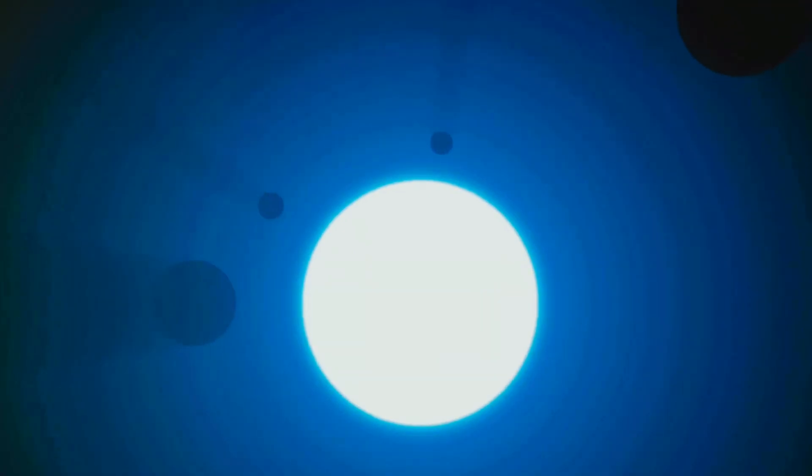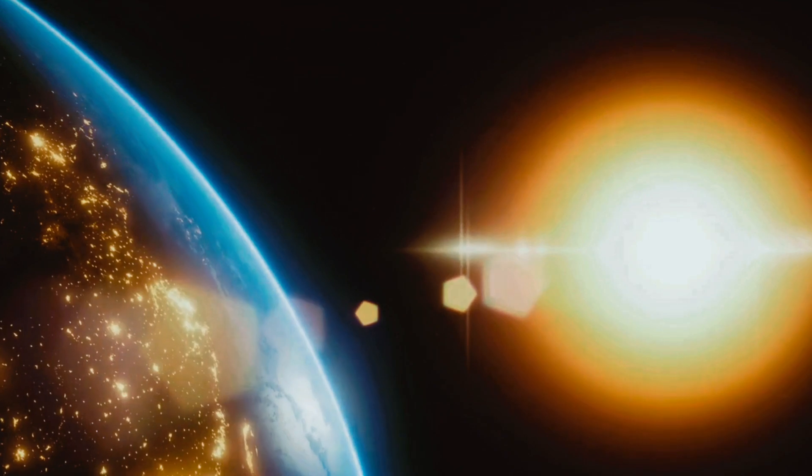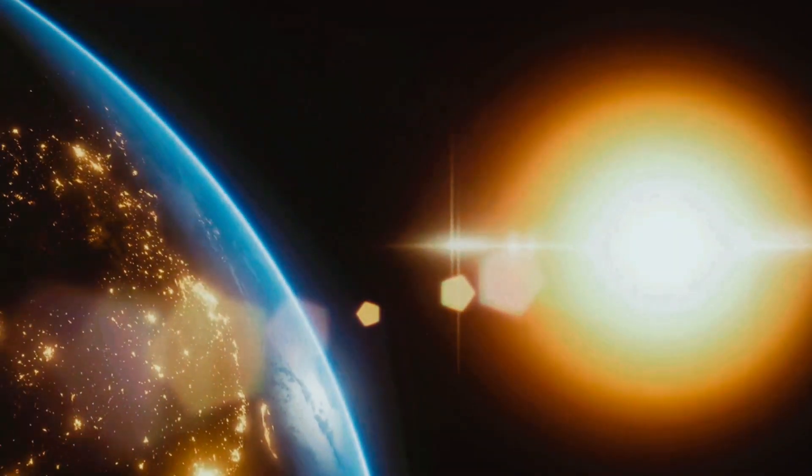We are part of a solar system, a cosmic ballet orchestrated by the sun's gravity. Each planet, including our own, follows a precise path, a celestial choreography that has been ongoing for billions of years.